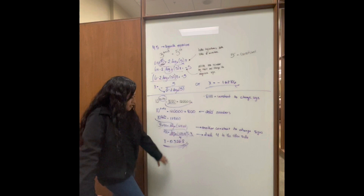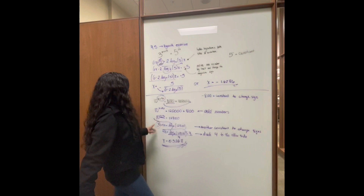Remember that every time a number goes to the other side, it's going to be negative. And when we see this, it's a logarithm — remember, it's base ten.